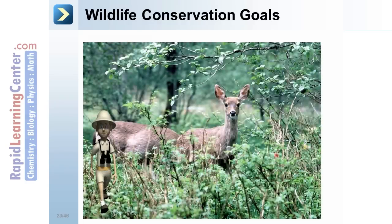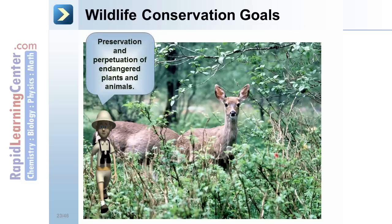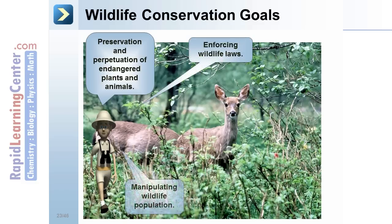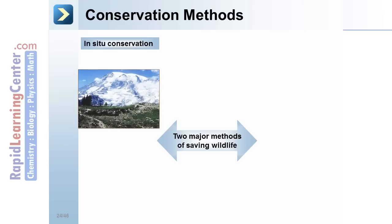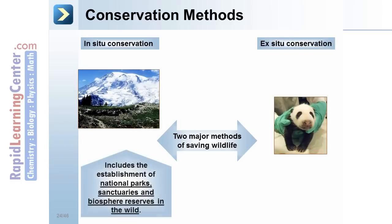Wildlife conservation goals include preservation and perpetuation of endangered plants and animals, enforcing wildlife laws, and manipulating wildlife populations to better manage them. Two major methods of saving wildlife are in situ conservation and ex situ conservation.